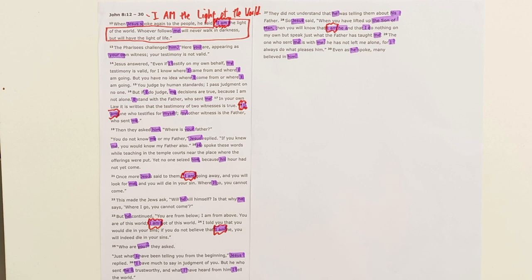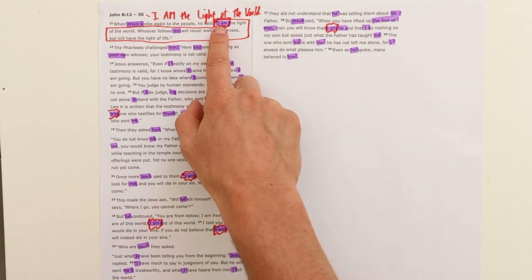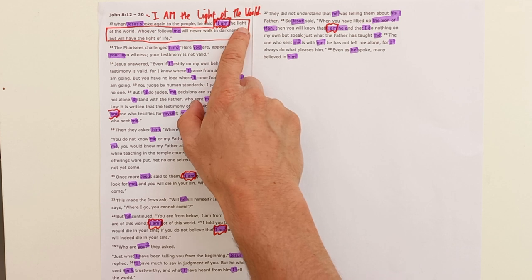Following that water pouring ceremony there were four big lamps in the temple courts that were lit. You can go and read up about it in the Jewish histories where they say as those four lamps were lit on this last and greatest day of the festival, that light beamed right across the whole city of Jerusalem. And with that scene happening, then Jesus says 'I am the light of the world.'